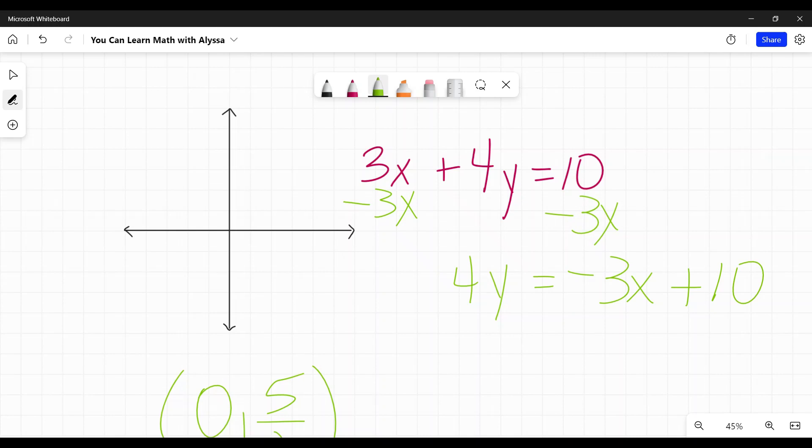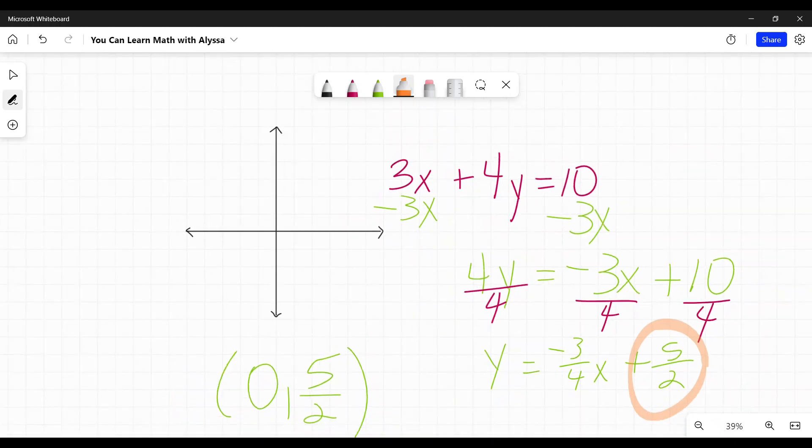And then since this is y times 4, I want to divide everything by 4 to get rid of that. And I'm going to get y equals negative 3 fourths x plus 10 fourths, which again, we can simplify to five halves. Now it's in y equals mx plus b format. I know my b is my y-intercept. Five halves. Hey, it works either way.